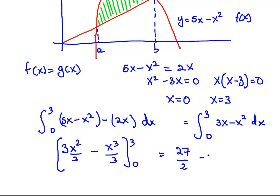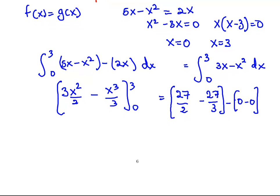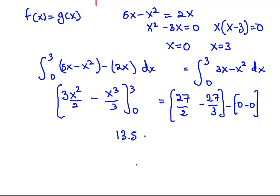Minus 0, minus 0. And that is equal to 13.5 minus 9, minus 0, minus 0. And that's 4.5 minus 0. So, the answer is 4.5 square units. That's the answer to the first one there, 4.5 square units.